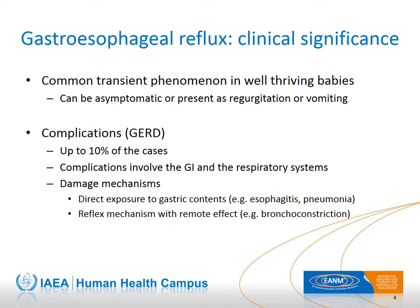Gastroesophageal reflux is a common transient condition in well-thriving babies. It can be asymptomatic or present as regurgitation or occasional vomiting. In approximately 10% of cases, complications occur involving the gastrointestinal and respiratory systems. Complications are caused by direct exposure to gastric contents that can damage the esophageal mucosa or lung parenchyma. Pulmonary complications may also occur via a reflex mechanism, where irritation of the esophageal mucosa triggers apnea or bronchospasm. Indeed, gastroesophageal reflux is one of the etiologies of asthma in children.